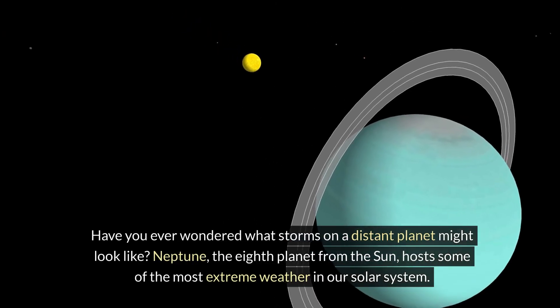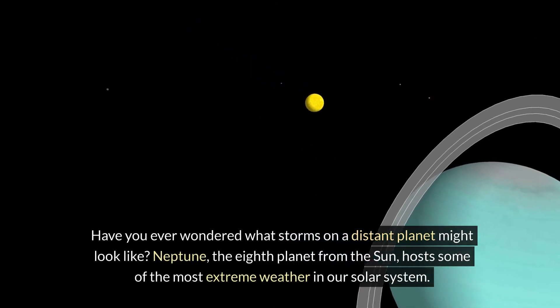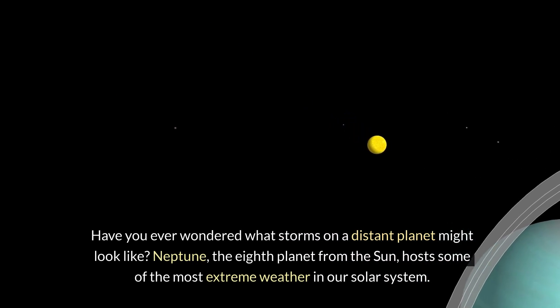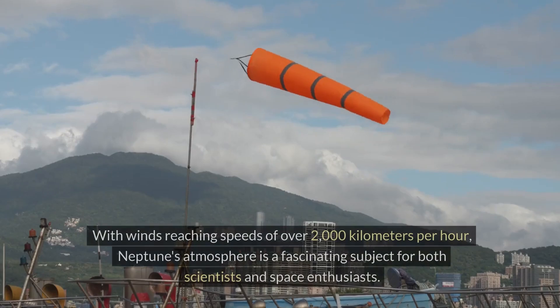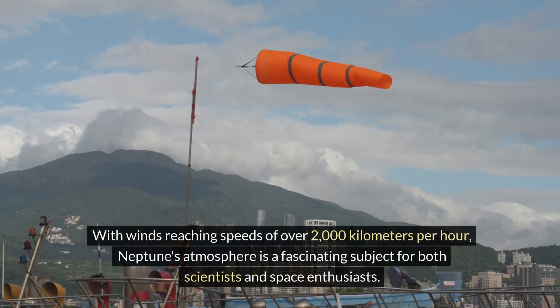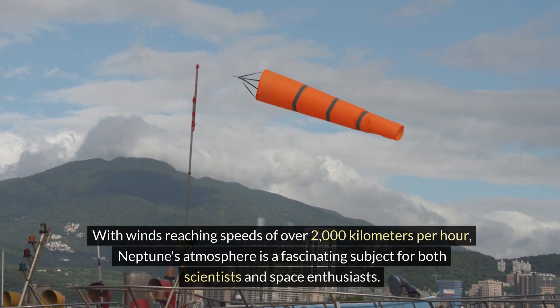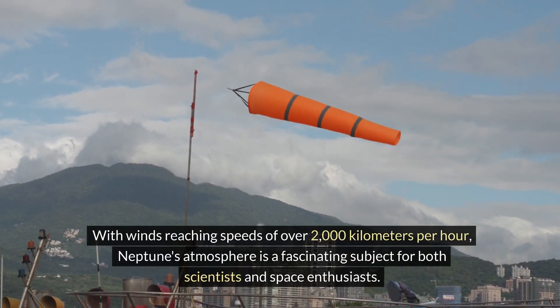Have you ever wondered what storms on a distant planet might look like? Neptune, the eighth planet from the Sun, hosts some of the most extreme weather in our solar system. With winds reaching speeds of over 2,000 kilometers per hour, Neptune's atmosphere is a fascinating subject for both scientists and space enthusiasts.